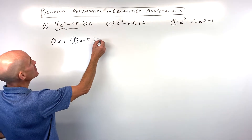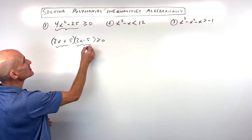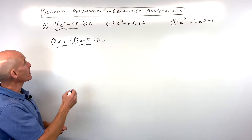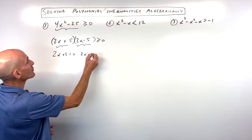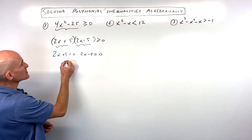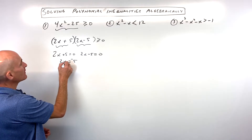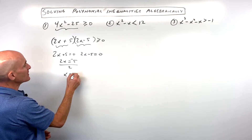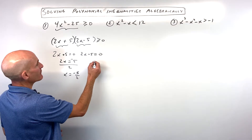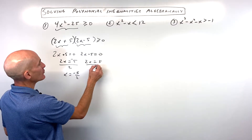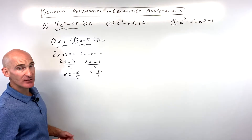Now what we want to do is set each of these factors — each of these groups — to zero. You can make a little mini-equation, or you can do the work in your head. Here I'm going to subtract 5 from both sides and divide both sides by 2, so we get x equals negative 5/2. Then I'm going to add 5 to both sides and divide both sides by 2, so we get x equals positive 5/2.